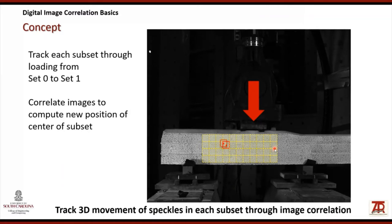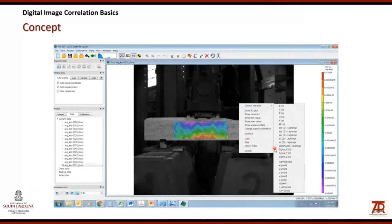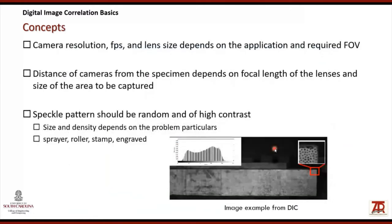This tracking is done through correlating the two image sets, and can be applied to any set of images. Once all points have been computed, they are placed in a color map representing the deformation field, strain, or any other derived parameter. Camera resolution, acquisition frequency, and lens size depend on the application and required field of view. The speckle pattern should be random and high contrast, with size and density depending on the problem. The speckle can be applied by sprayer, roller, stamp, or even engraved on the surface.